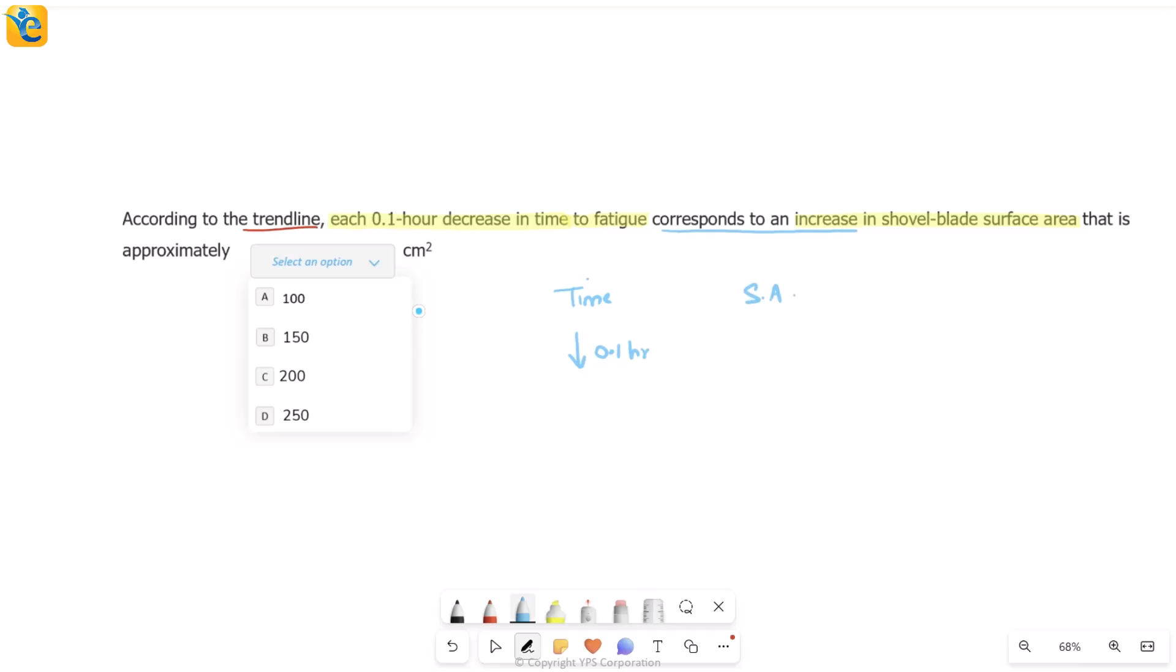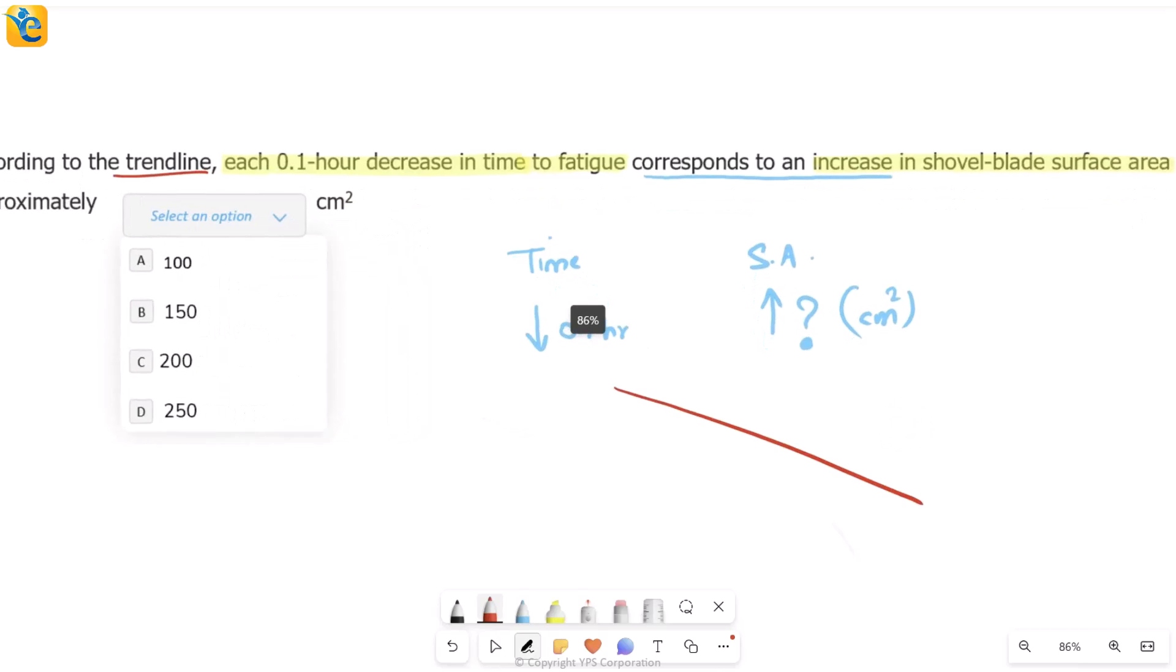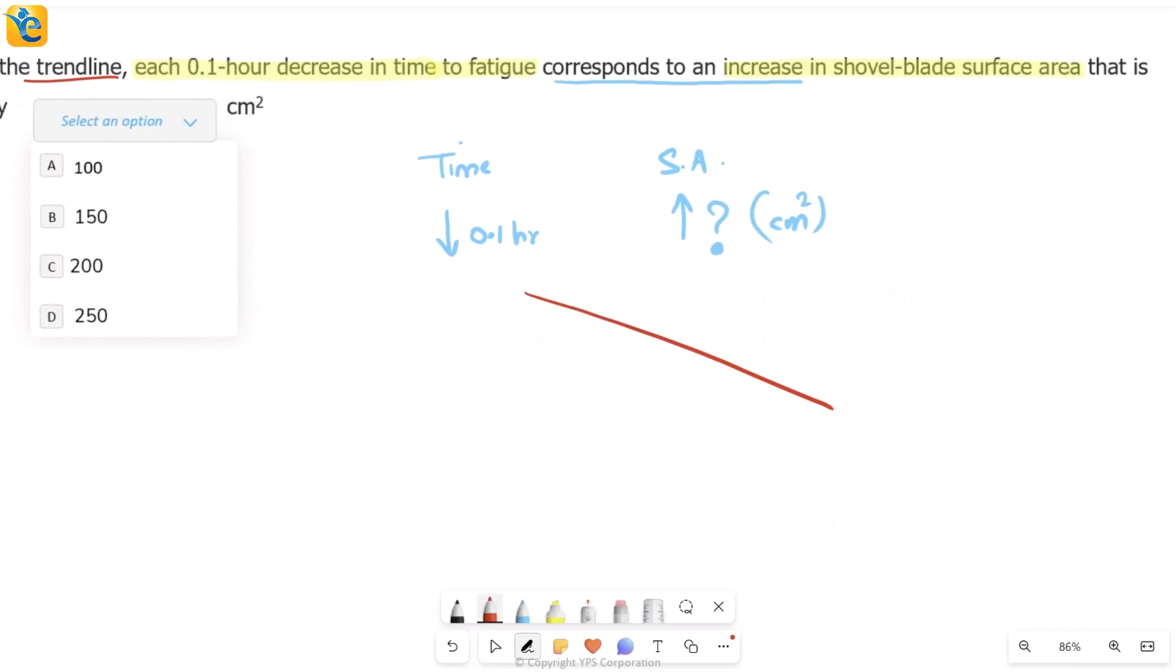Whenever this time to fatigue goes down by 0.1 hour, correspondingly how much does surface area increase? Since that is in centimeter squared, all your choices are also in centimeter squared. I have to read that line, and what do I need to find on this?